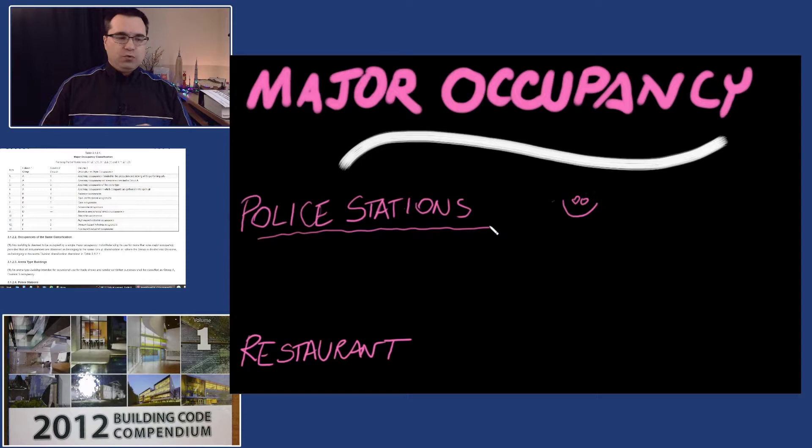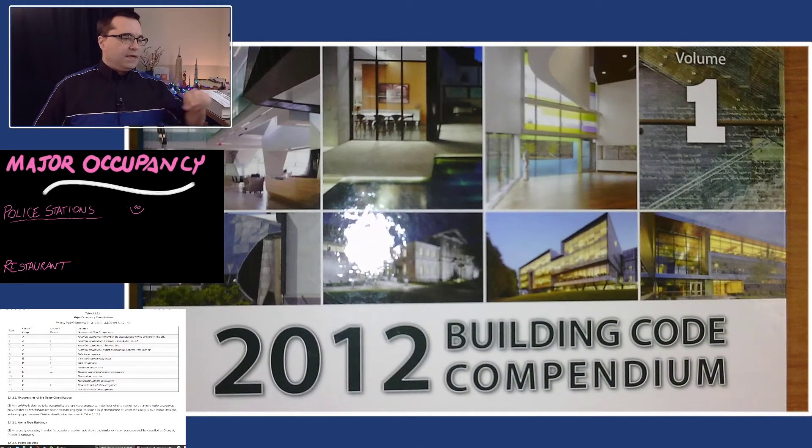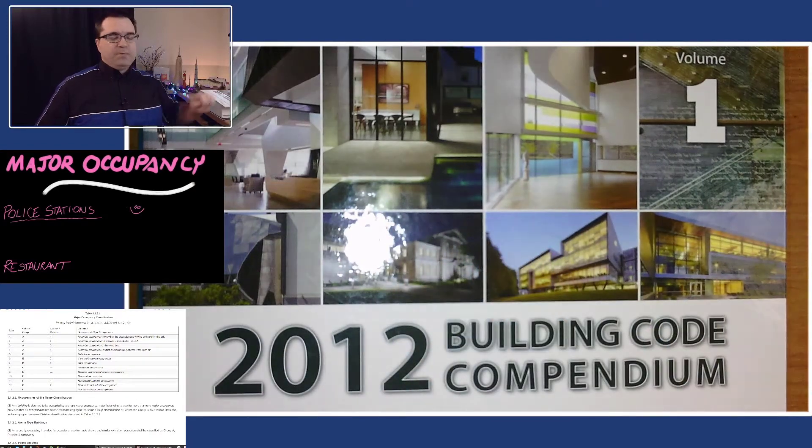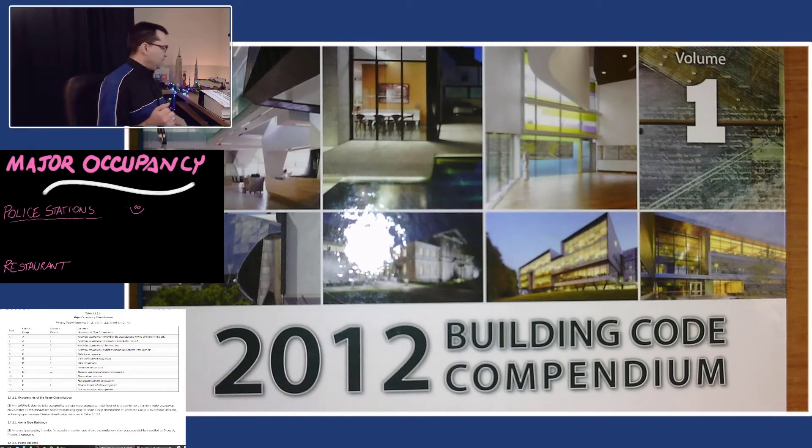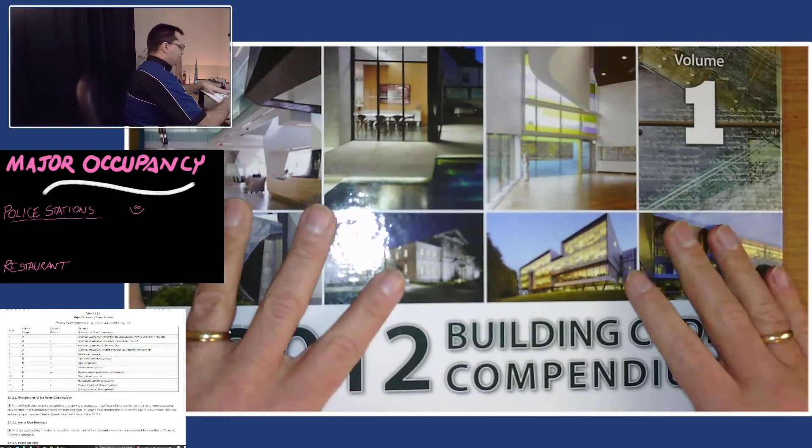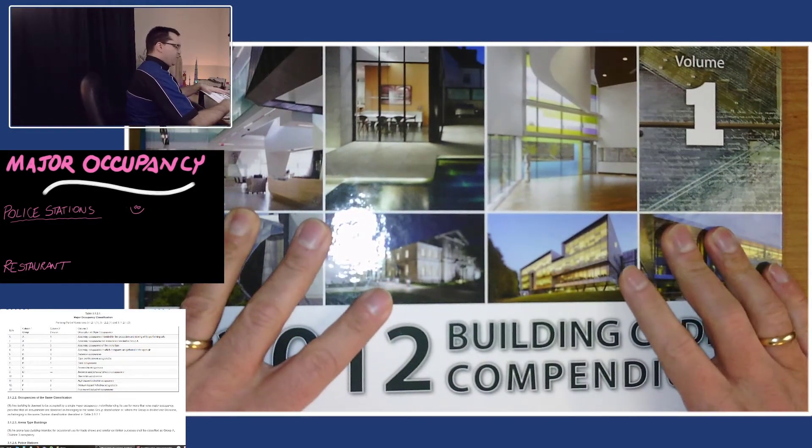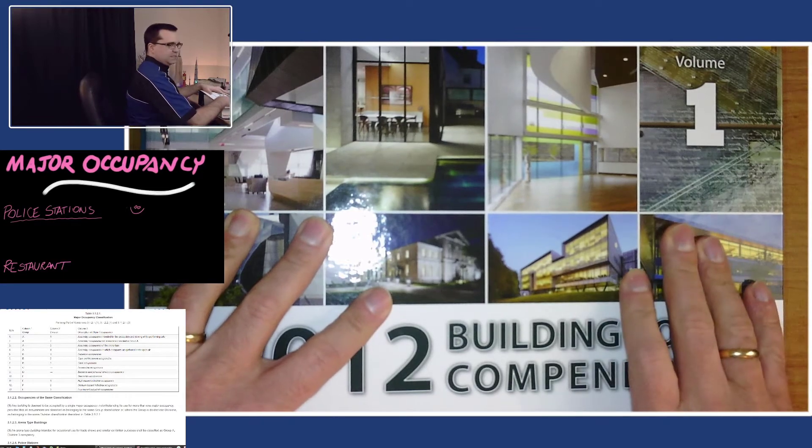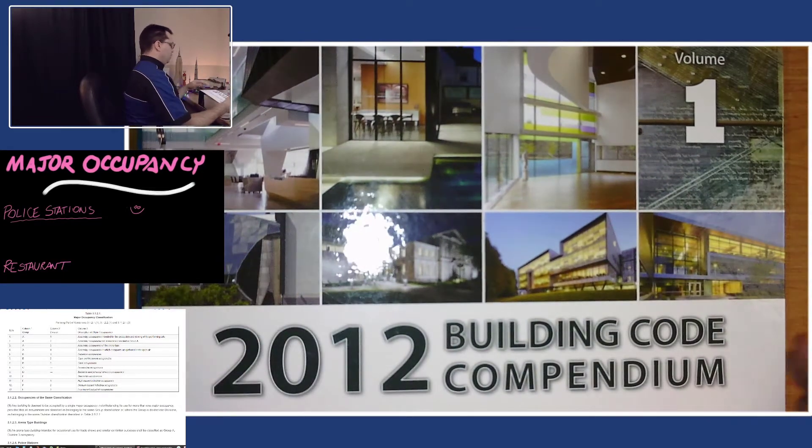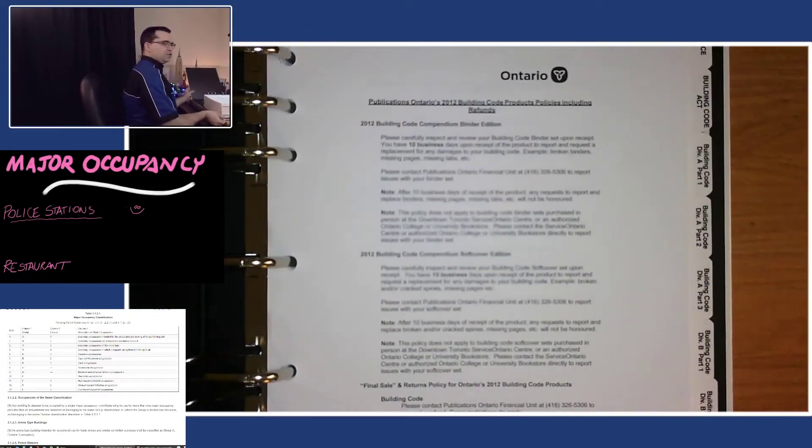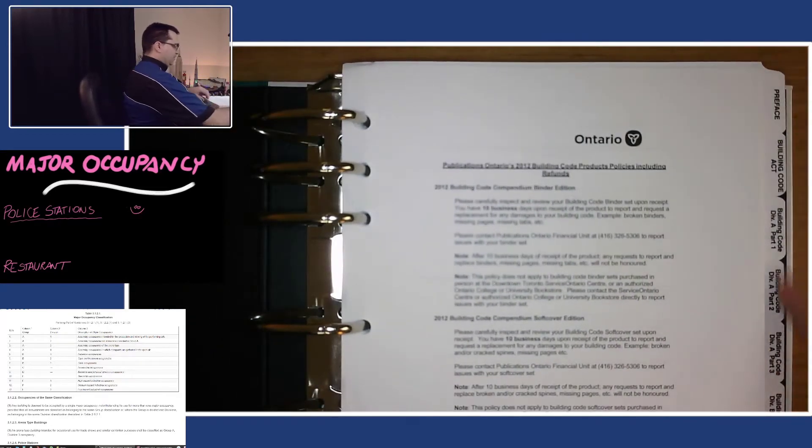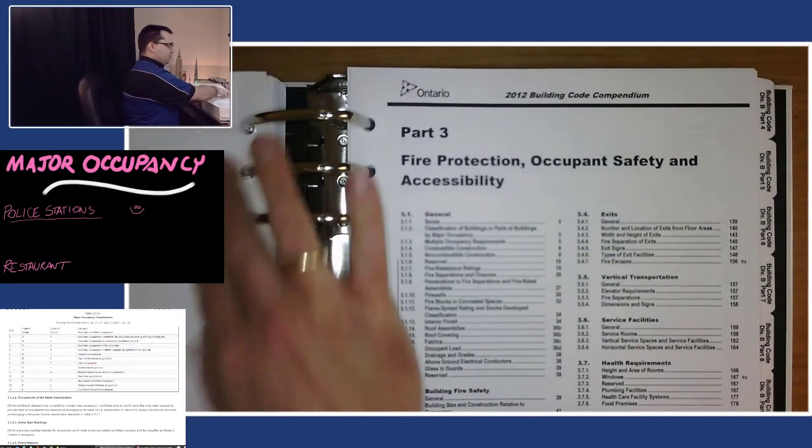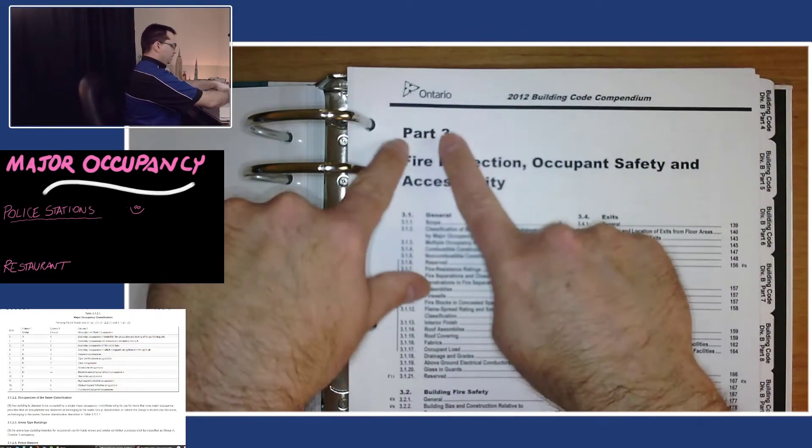You've watched topic two, so what we're going to do is bring up the building code. If we're in the building code and we want to figure out the major occupancy of a building, we know that we need to go to Division B Part 3. So I'm going to flip through and find Division B Part 3 right here.